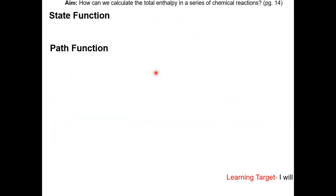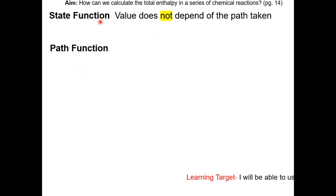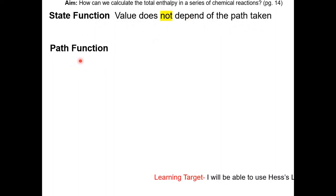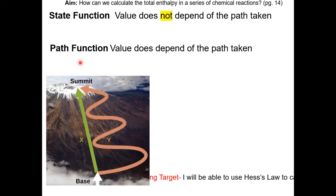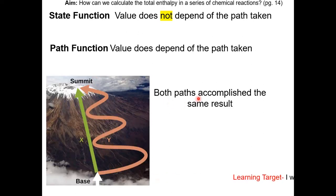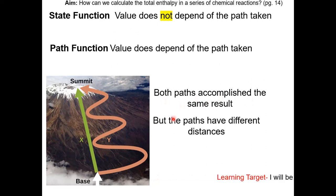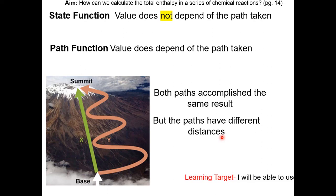Now we're going to discuss two types of functions: state and path functions. A state function is a value that does not depend on the path taken, while a path function does depend on the path taken. For example, from the motivation, both paths accomplish the same result, but the paths have different distances. Therefore, distance is a path function.